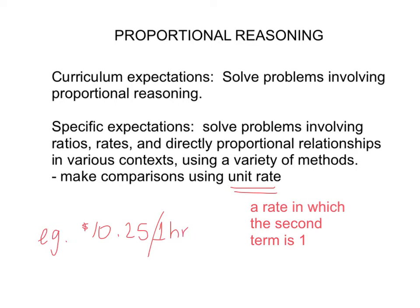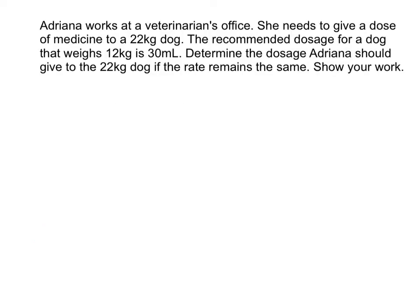Now let's look at a problem that involves using unit rate. Adriana works at a veterinarian's office. She needs to give a dose of medicine to a 22kg dog. The recommended dosage for a dog that weighs 12kg is 30ml. Determine the dosage Adriana should give to the 22kg dog if the rate remains the same. Show your work.